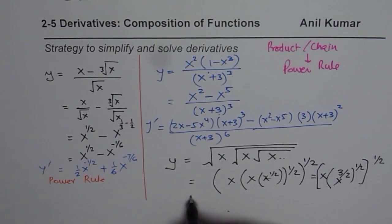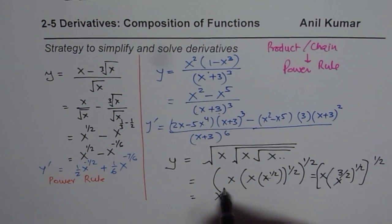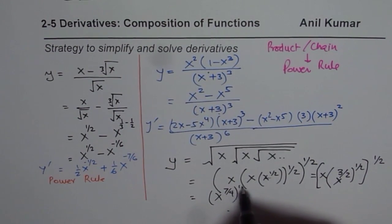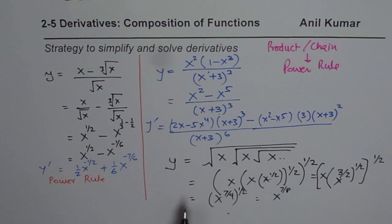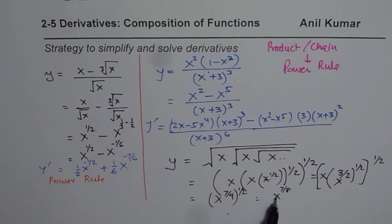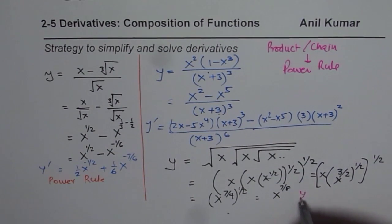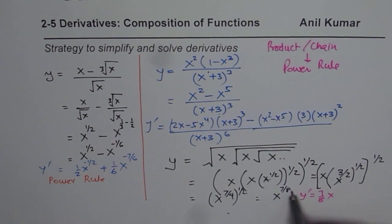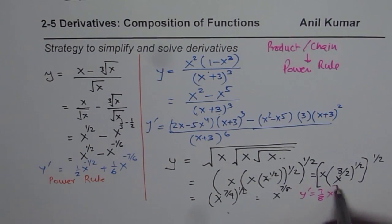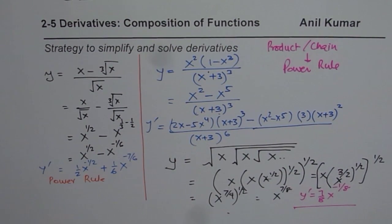So once you simplify this, you get x to the power of 7 over 4 to the power of half, which is x to the power of 7 over 8. So once you have y equals x to the power of 7 over 8, you can apply the power rule and find the answer very easily. So your answer, y dash is 7 over 8 x to the power of 7 over 8 minus 1, which is minus 1 over 8. That's simple.